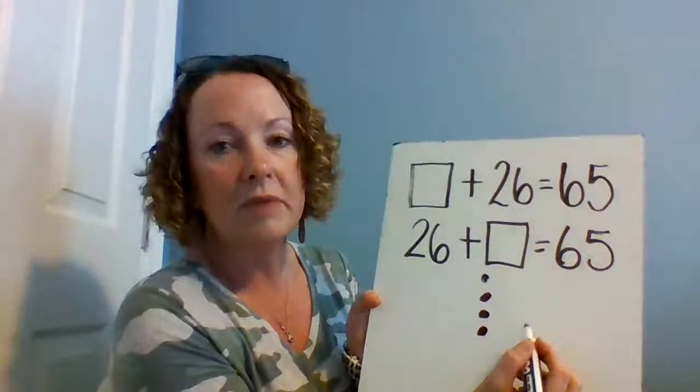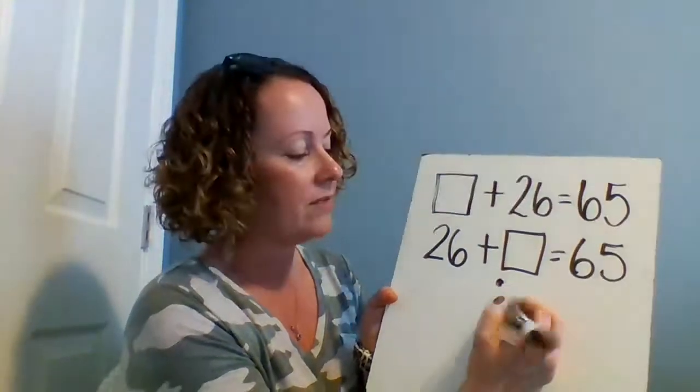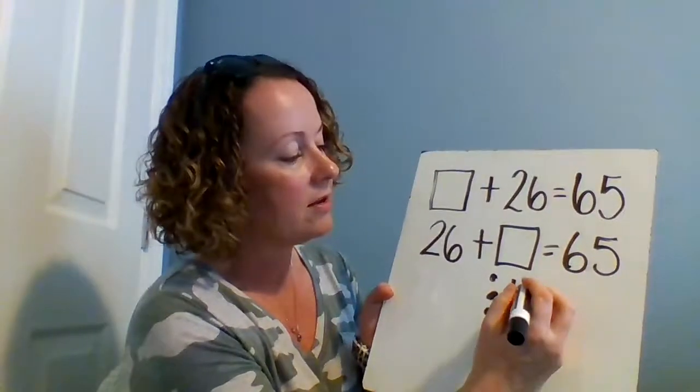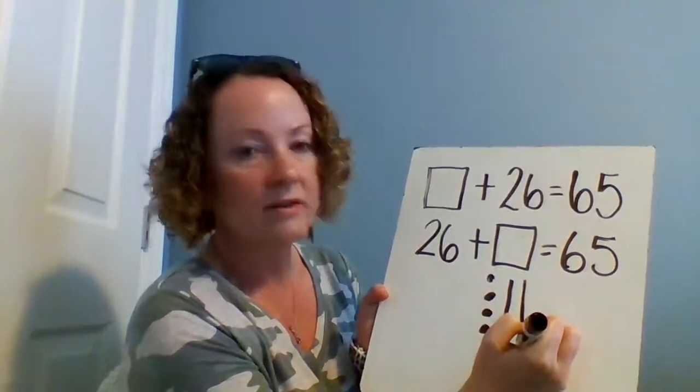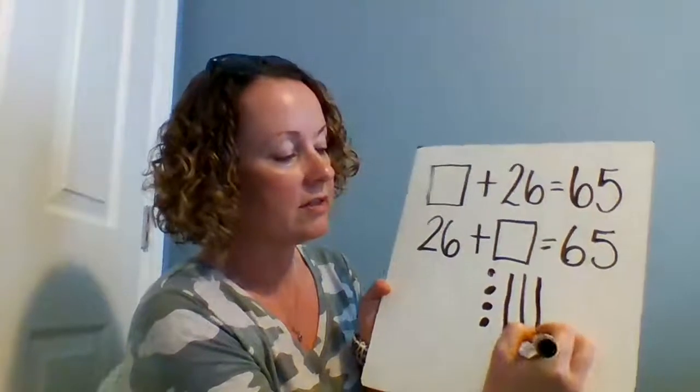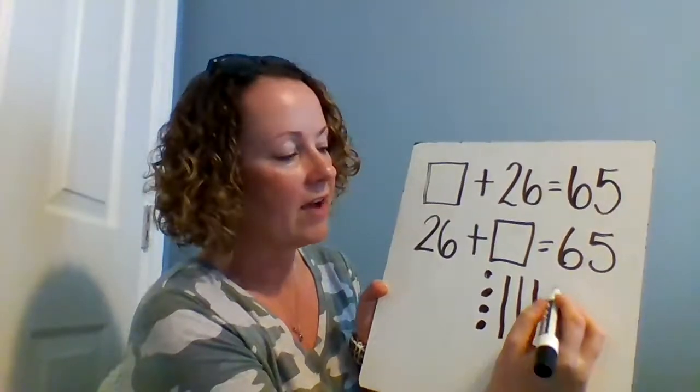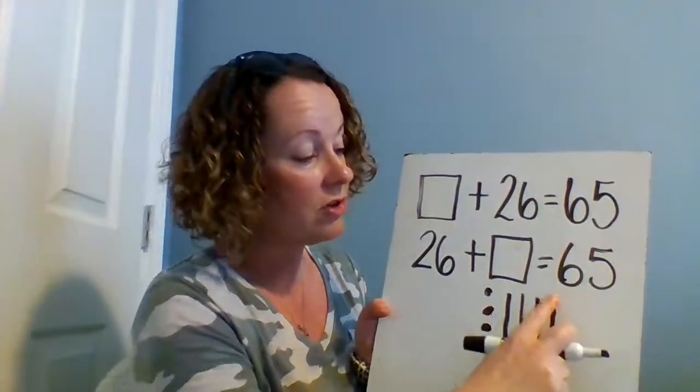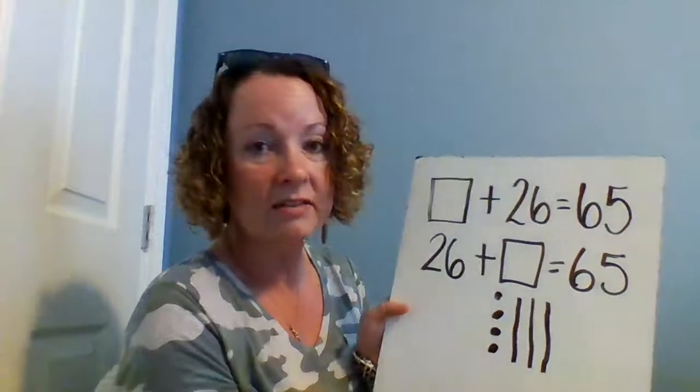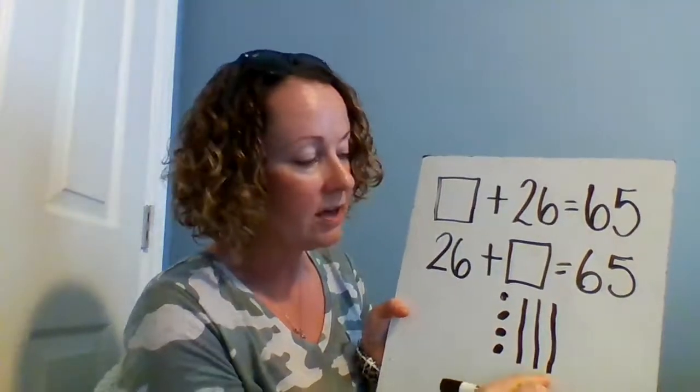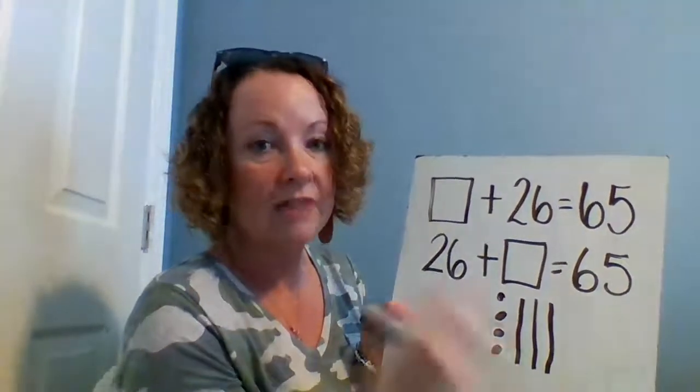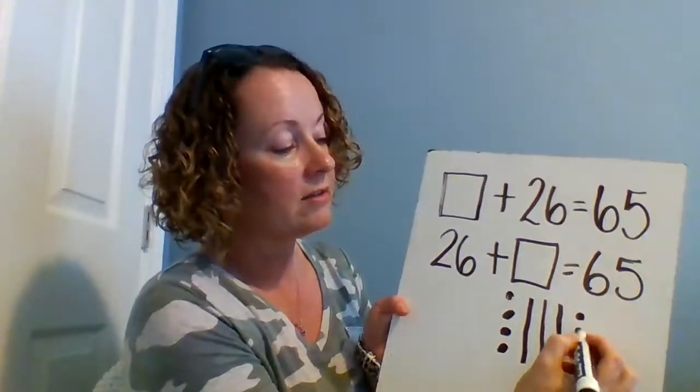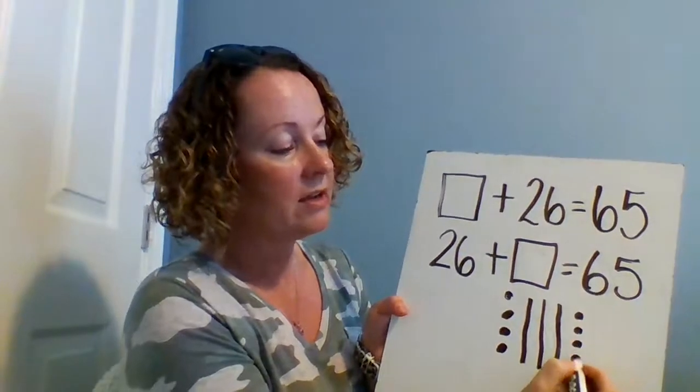Now from here I can keep counting on by tens. That's right. So this is 30 plus 10 more is 40, plus 10 more is 50, plus 10 more is 60. If I add another 10 I'm at 70, that's too much. So I can't keep counting by tens. Instead, to get from 60 to 65 I have to count by ones. So 61, 62, 63, 64, 65.